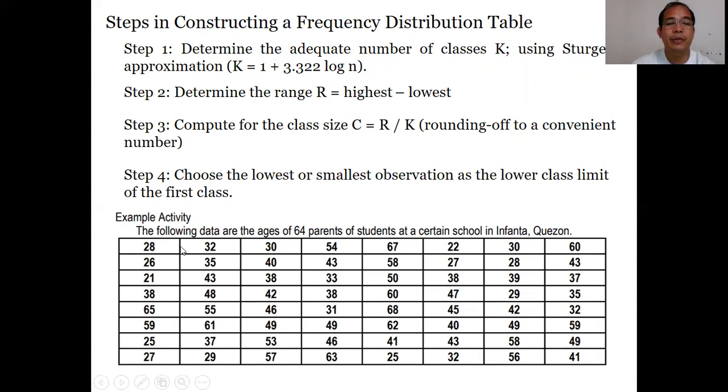Let's have an example. The following data are the ages of 64 parents of students at a certain school in Infanta, Quezon. How many parents of students? There are 64. Let's check by counting: 8 times 8 equals 64. So we have validated that there are 64 parents of students in a certain school in Infanta, Quezon.